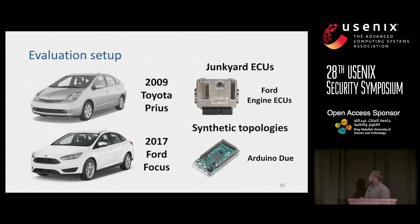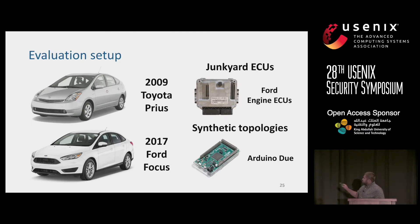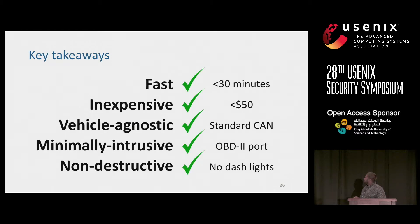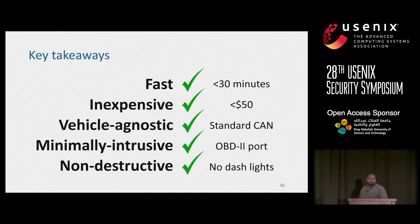For our evaluation, we used two different cars: a 2009 Toyota Prius provided by the university and a 2017 Ford Focus from a salvage yard with all electronics intact. We also got ECUs from a junkyard and did testing on a synthetic topology using Arduino Duos, which is also where we run our CANVAS mapper. Key takeaways: the system runs in under 30 minutes, uses an Arduino for less than $50, uses the standard CAN implementation via the onboard diagnostics port, and following our steps, you won't have any dash lights afterwards.